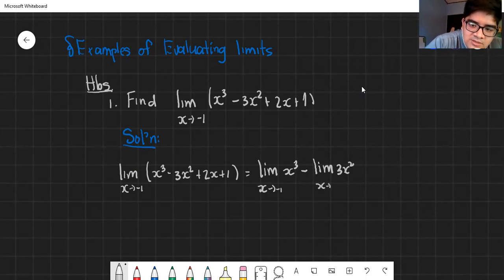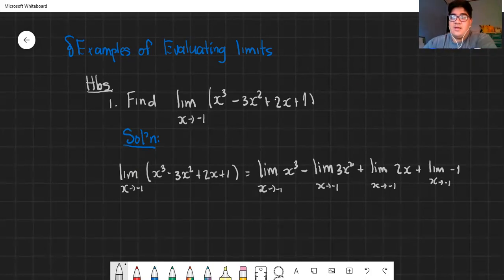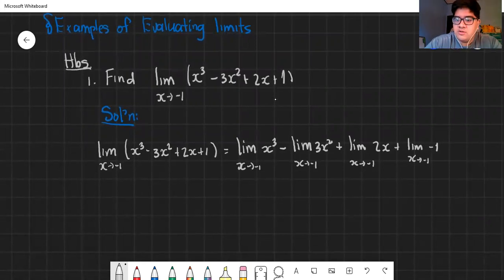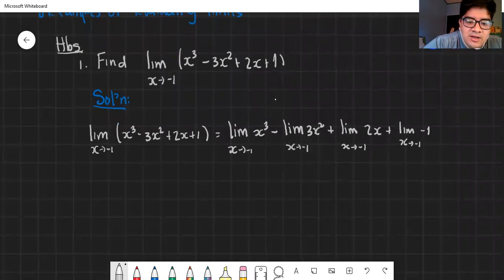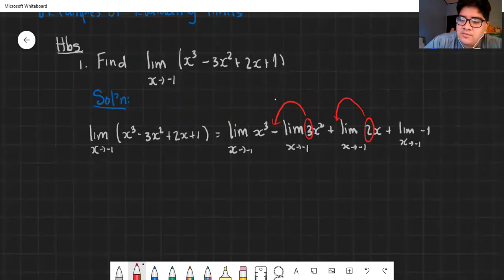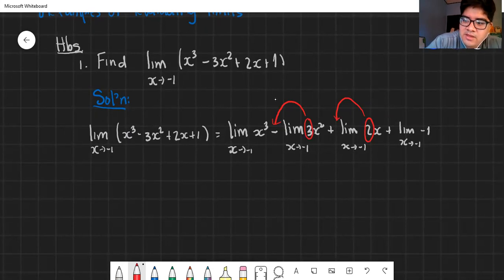The limit of x cubed as x approaches negative 1 minus 3 times the limit of x squared as x approaches negative 1 plus 2 times the limit of x as x approaches negative 1 plus the limit as x approaches negative 1 of 1. What you do is when you see constants like this, you take them out. The coefficients of the polynomials. Now, if there's no variable, the limit of a constant is just the constant. So the answer here is basically 1.